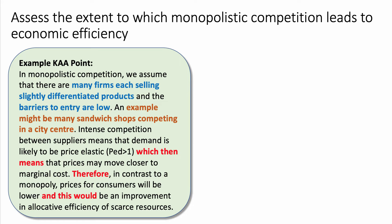Here's the first KAA point. In monopolistic competition, we assume that there are many firms each selling slightly differentiated products and the barriers to entry are low. Make it clear to the examiner that you know this is the market structure known as monopolistic competition, then add in an example — for instance, sandwich shops competing in the city centre. Intense competition, which is a feature of this market structure between suppliers, means that demand is likely to be price elastic — coefficient of elasticity greater than one — which means prices may move closer to marginal cost.